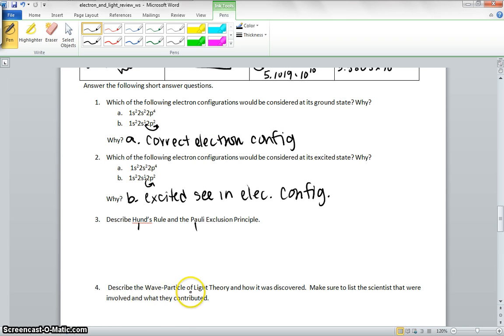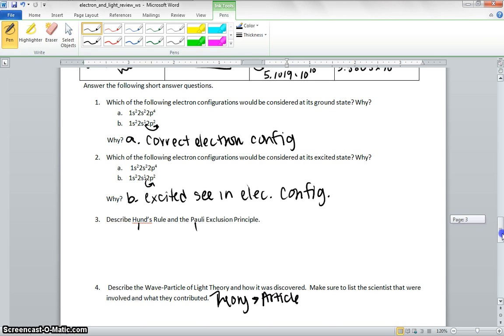Describe the wave particle of light theory and how was it discovered and make sure you list the scientists who were involved in this contribution. And that is all in the theory article on the website. The main person that was doing it was who? You better read the article.